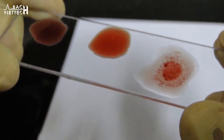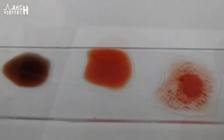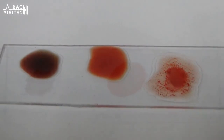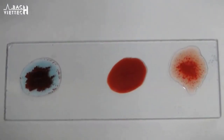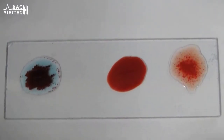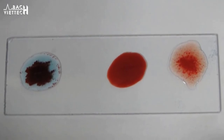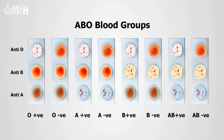When RBCs carrying one or both antigens are exposed to the corresponding antibodies, they agglutinate — that is, they clump together. For example, in this slide, agglutination occurs on the first and third drops, which corresponds to antigen A and the Rh factor. So the blood group is A positive. Thus we can identify the blood group by noticing the agglutination on the corresponding drops.